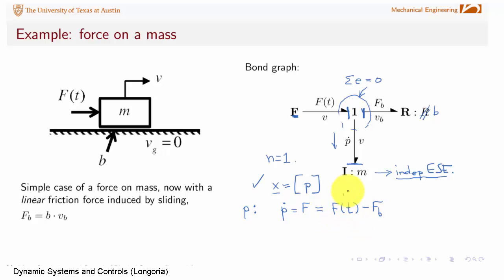Right hand side is in terms of an input, but f_b needs to be replaced by state. That's equal to b times v, where v is equal to p over m. And once you substitute this back in here, you're done with your state equation. One order one, one state equation, and that's all you need.